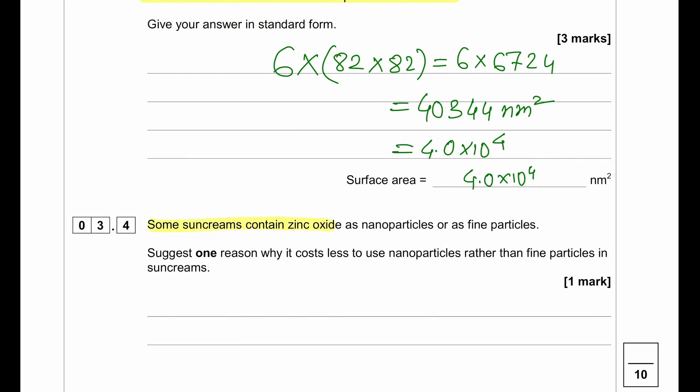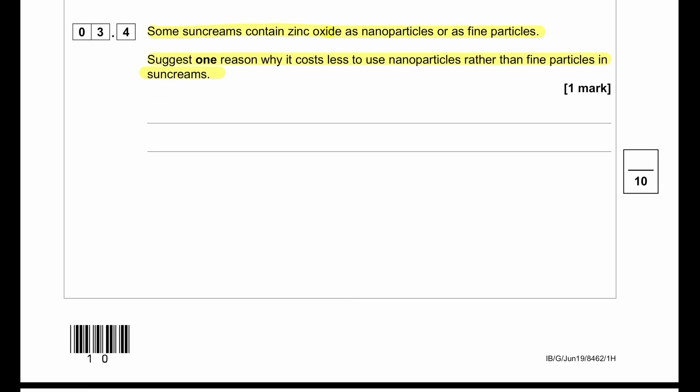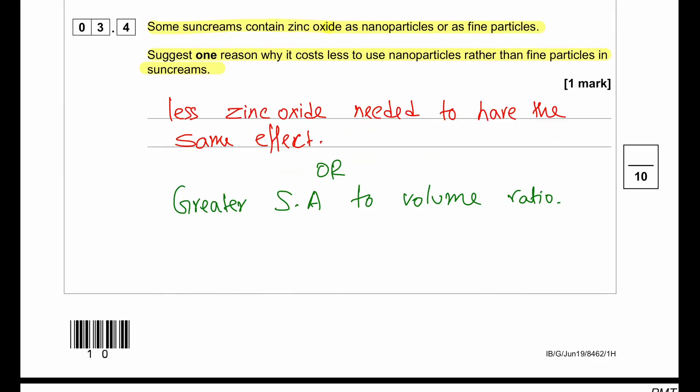Some sun creams contain zinc oxide as nanoparticles or as fine particles. Suggest one reason why it costs less to use nanoparticles rather than fine particles in sun creams. If we use nanoparticles, it can spread over a large surface area, so we need less for the same effect.